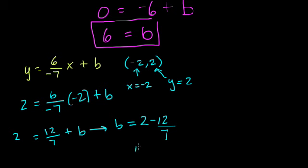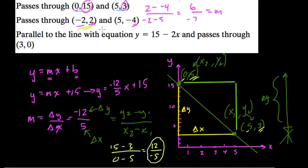Now 2 is 14 sevenths minus 12 sevenths. What does that equal? Well, that equals 2 over 7. So now we have our equation. y is equal to negative 6 over 7, same thing as 6 over negative 7x minus 12 sevenths. And we're done with that one. Parallel to the line with this equation and passing through (3, 0).